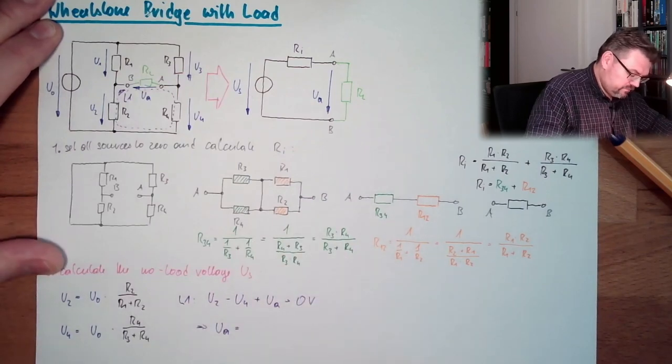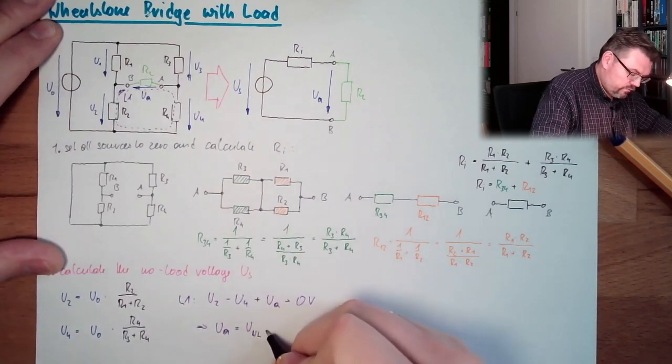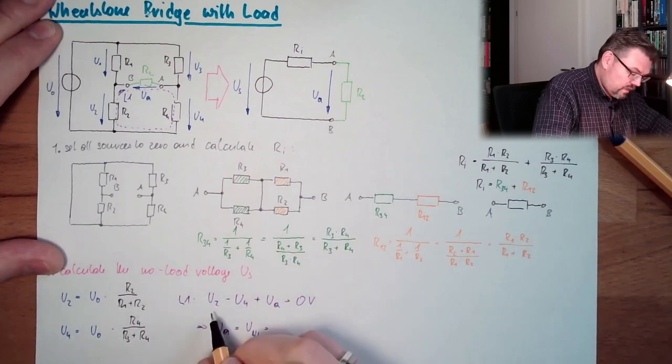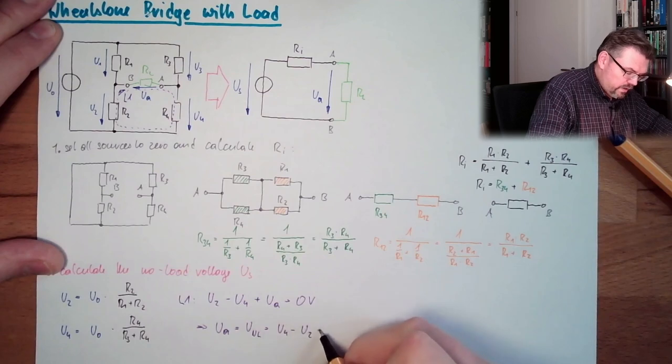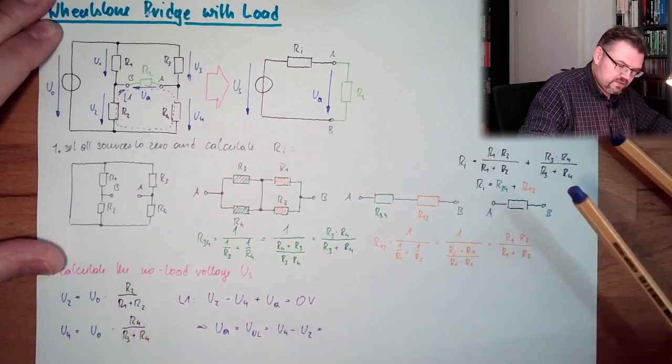Ua equals U no-load, of course, in this case. And this is U4 minus U2. And now we only have to set this in.